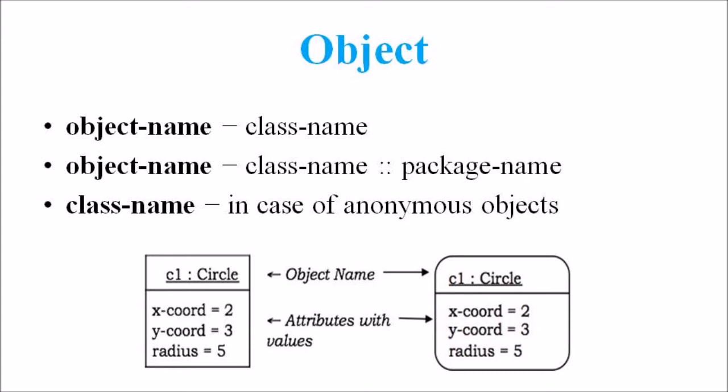For example, let us consider an object of the class circle named c1. We assume that the center of c1 is at coordinates 2,3 and the radius of the circle c1 is 5. Therefore, this figure depicts the object of the class circle.